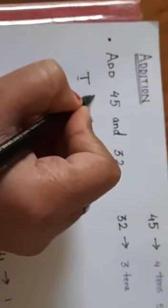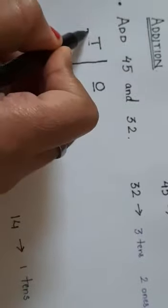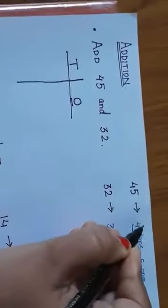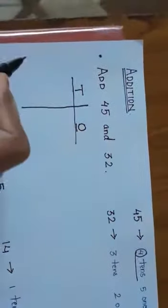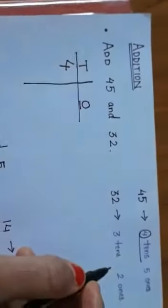So what do we do first? The first thing that you do is, first you write T and O. Okay? You have divided the two houses, tens and ones. Now, 4 is 4 tens, right? So 4 is 4 tens. Right? What do we do? We write it by T. We write it by T. So I will write 4 here. Okay?